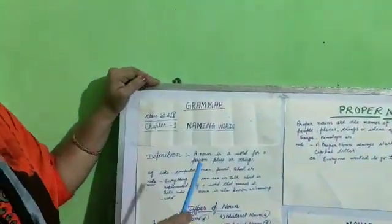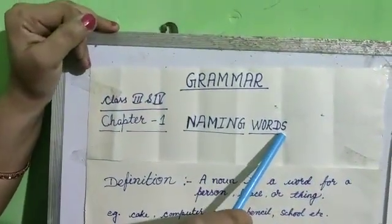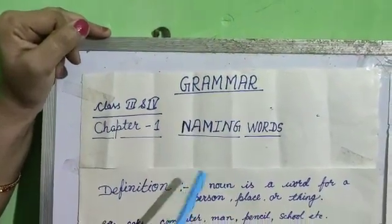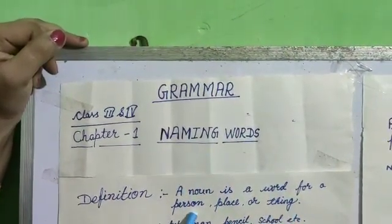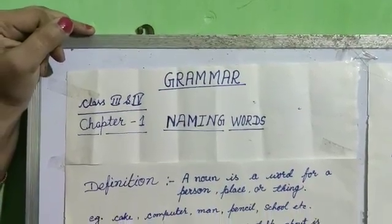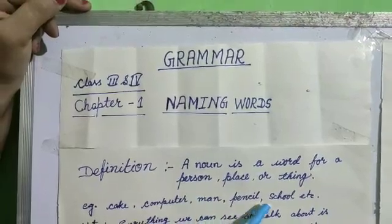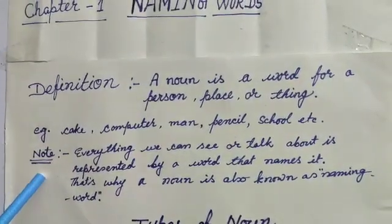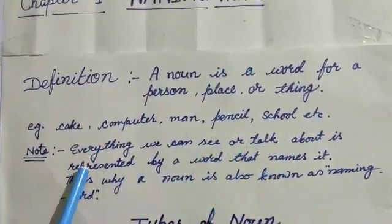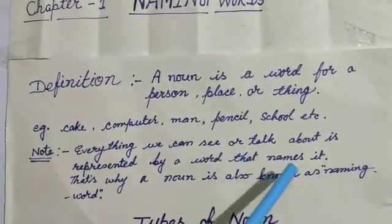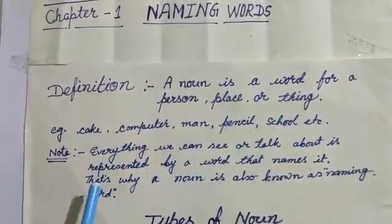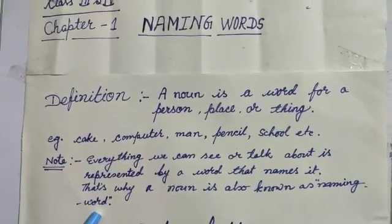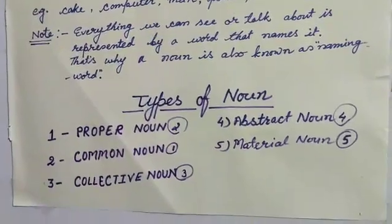Now, naming words — that is our topic. It is one of the eight parts of speech. The definition of a naming word: a noun is a word for a person, place, or thing. For example, cake, computer, man, pencil, school, etc. Everything we can see or talk about is represented by a word that names it. That's why a noun is also known as a naming word.